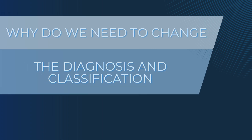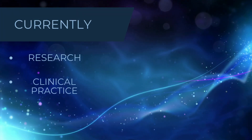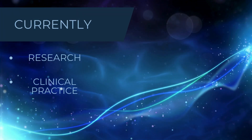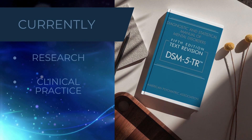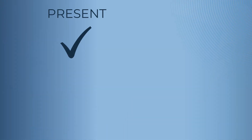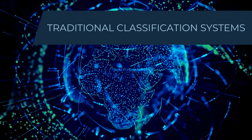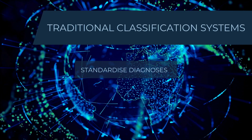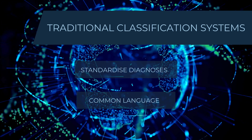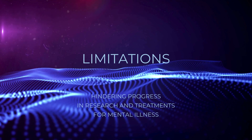Why do we need to change the diagnosis and classification of mental disorders? Currently, mental health research and clinical practice rely on traditional classification systems like the DSM. These systems define mental disorder diagnoses almost entirely categorically, as either present or absent based on whether an individual meets enough of the standardized diagnostic criteria. These traditional classification systems standardize diagnoses, providing a common language for researchers and clinicians around the world. However, there is now clear evidence that limitations in the DSM are hindering progress in research and treatments for mental illness.